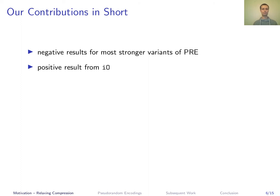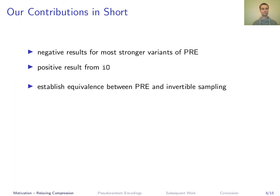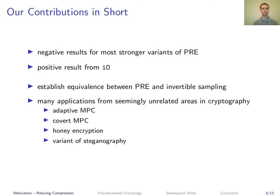Here's a short preview of the contributions. First, we derive negative results for many flavors of pseudorandom encodings, and also a positive result from indistinguishability obfuscation for a weaker notion. We prove an equivalence between pseudorandom encodings and a notion called invertible sampling, which was studied in the area of multiparty computation. We also derive quite a number of applications from pseudorandom encodings, coming from seemingly unrelated fields in cryptography, and we view identifying these connections as the main contribution.